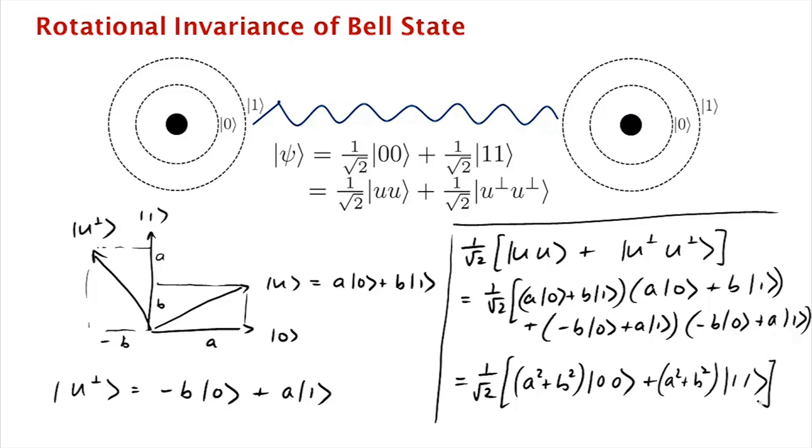And now notice that everything else cancels. So for 0, 1, you have ab, and out here you have 0, 1 minus ab. And for 1, 0, you have ba, and then minus ab. So it all cancels. But now remember that our state is normalized, which means that a squared plus b squared is equal to 1. And so this is just 1 over square root 2 times 0, 0 plus 1, 1, as promised.